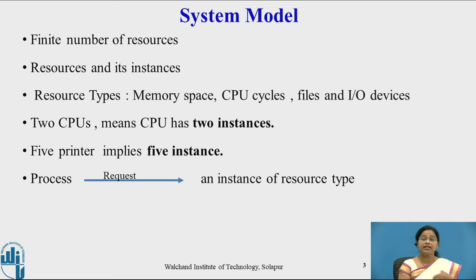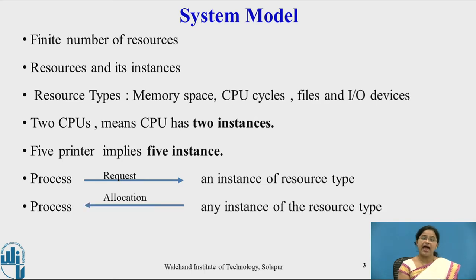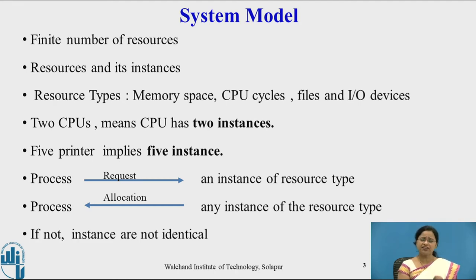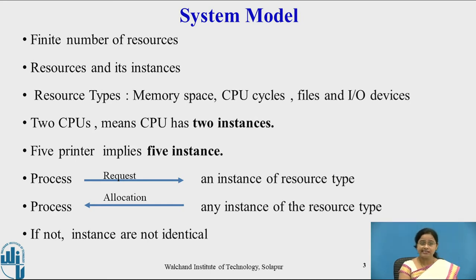A process must request an instance of a resource type. If that instance is available, it is allocated to the process. If it is not possible to allocate an instance to the process, that means the instances are not identical and cannot be allocated to that process.